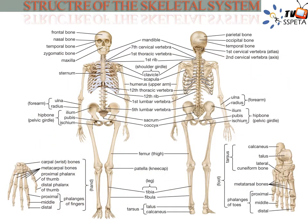The skeleton has over 200 bones — specifically 206. You should be able to identify the main bones in the body. The main bones of the skeleton and their location are shown in this picture, with all the bones clearly labeled.